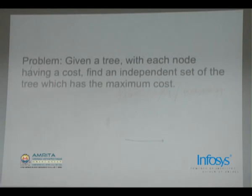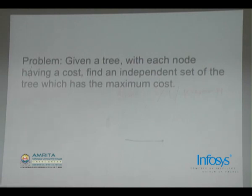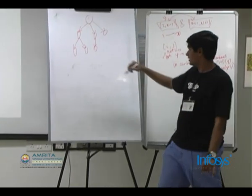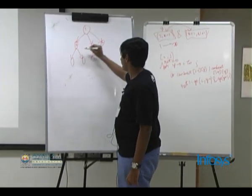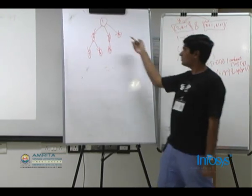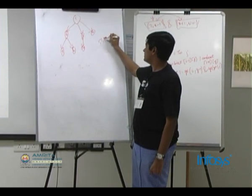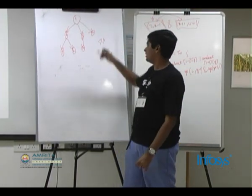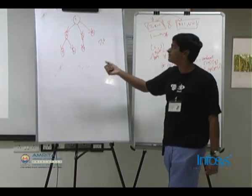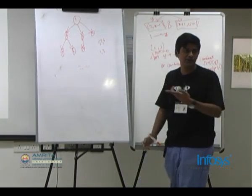The next problem: you are given a tree. You can assume any suitable representation. Each node has a cost. Find an independent set of the tree which has maximum cost. An independent set of a graph is a subset of vertices such that there exists no edge between any two vertices in the set. For example, nodes 1, 7, and 6 form an independent set because there is no edge between any pair of them. But 1 and 3 is not an independent set because there is an edge between 1 and 3.